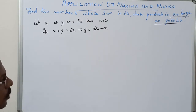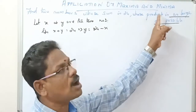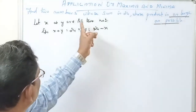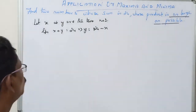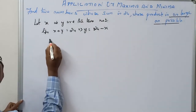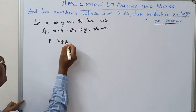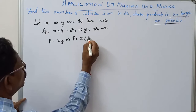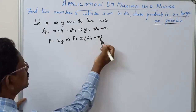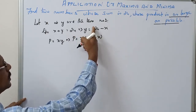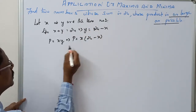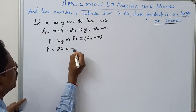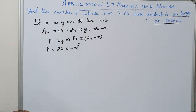Now we need the product to be as large as possible, so we take the product of the two numbers. Let P equal x times y. Substituting, P is equal to x times (24 minus x), which gives P equal to 24x minus x squared.